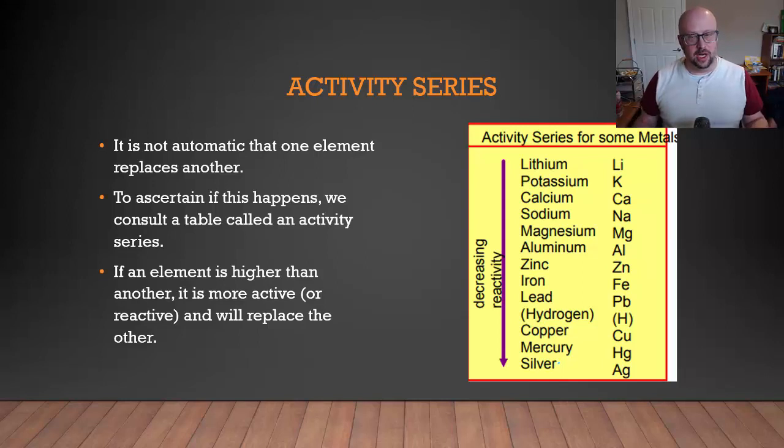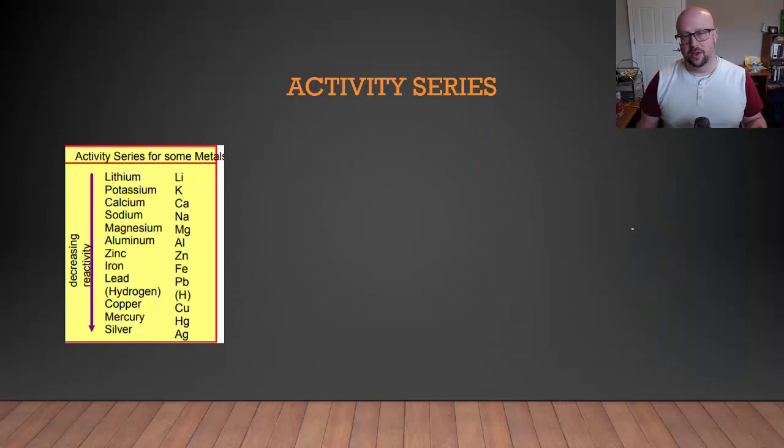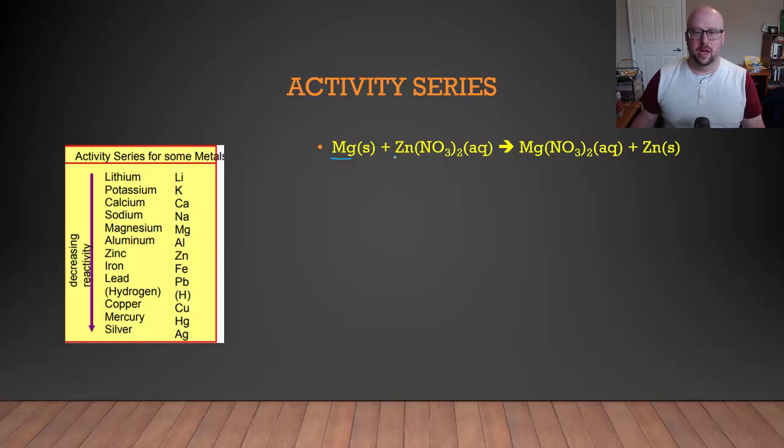When we're looking at activity series, we're looking to see if one metal is higher than the other metal. So for our case, we had magnesium and we had zinc. We're going to look on the table. We're going to see that magnesium is right there. Zinc is right there. And magnesium is indeed above zinc. So that means the magnesium is going to take zinc's place. It's going to swap out.